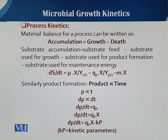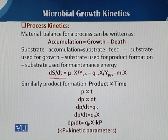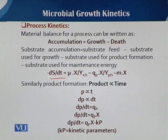In this equation, the change in substrate concentration with respect to time is equal to mu — the specific growth rate constant — with respect to biomass produced, divided by the yield coefficient, minus the product yield with respect to product and substrate, minus the maintenance energy utilized by the biomass in that fermentation culture.